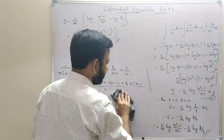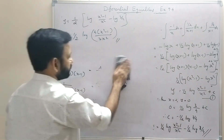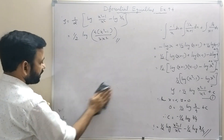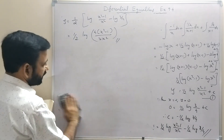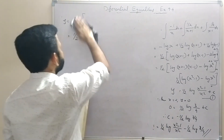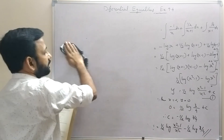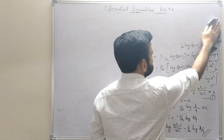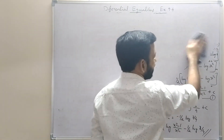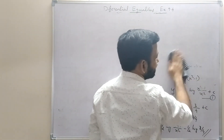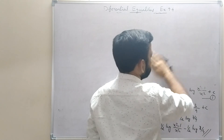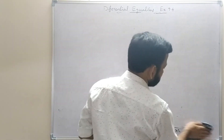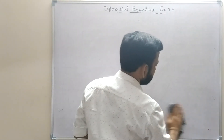Question 11 uses the same partial fraction method. The question is x³ + x² + x + 1 dy/dx = 2x² + x, when y = 1 and x = 0. We can find the partial fractions, integrate, then substitute x = 0, y = 1 to find c, giving the particular solution.